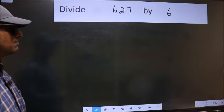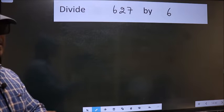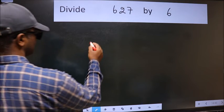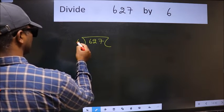Divide 627 by 6. To do this division, we should frame it in this way. 627 here and 6 here.